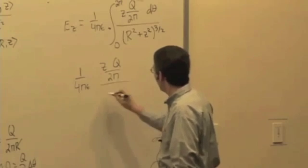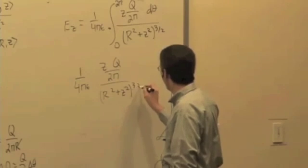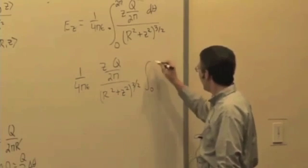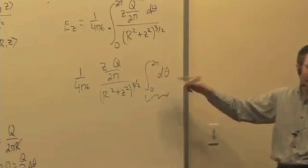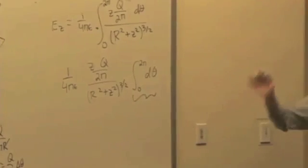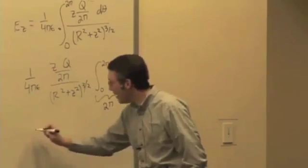So this all comes out of the integral, and this becomes z times q over 2 pi over r squared plus z squared to the 3 halves. Integral from 0 to 2 pi of d theta, and if I do that integral, what do I get? 2 pi. So the 2 pi cancels out,